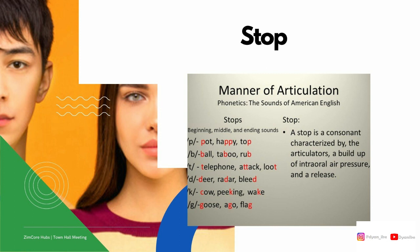Also when you say T and K, those are also stop sounds. Look at the examples of stop sounds. I have six consonants: P for 'pot,' 'happy,' and 'top'; B for 'ball,' 'taboo,' and 'rub'; and T for 'telephone,' 'attack,' and 'loot.'